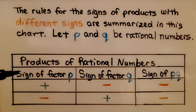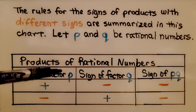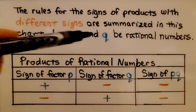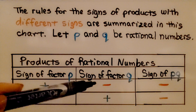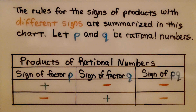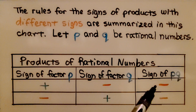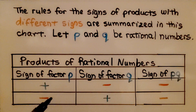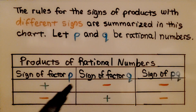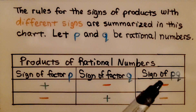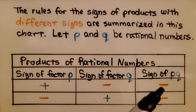Here is the sign of factor p, because p and q are our factors. If p is positive and q is negative, the sign of p times q is going to be negative. If p is negative and q is positive, then p times q is negative. Notice there's one negative factor for each of these, and they have a negative product.